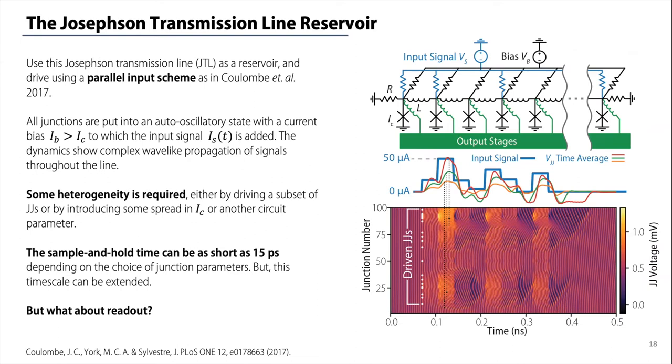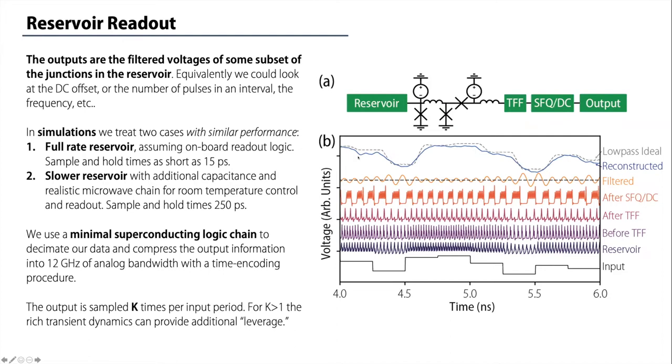So instead, what we wanted to do is just get these low-pass filtered voltages off the chip. For this, we need to do a little bit of digital electronics gymnastics. Essentially off of the reservoir, we pick off the signals at the particular junctions, put them through an output junction, and then feed them into a digital logic chain. In this case, it includes what is ultimately a buffer, which prevents back action into the reservoir. Then we have a toggle flip flop and an SFQ to DC converter, which is basically a latch.